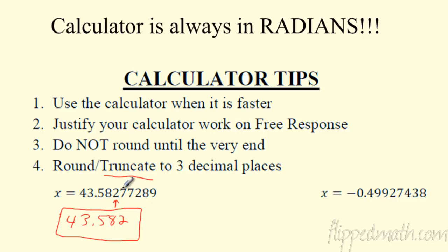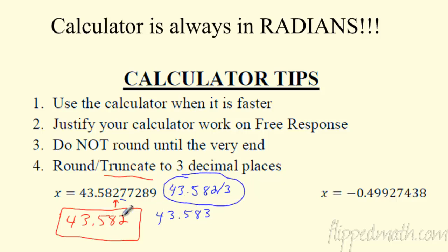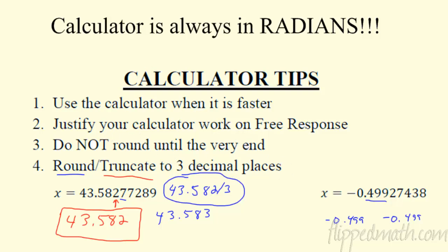If you round, you look at the next digit — it's above 5, so 43.582 rounds up to 43.583. A lot of times you'll see the answer key show 43.582/3 — either one gives you credit on the AP exam. I'm more of a truncator. For example, negative 4.99 — truncating, no extra thinking at all. Don't freak out if you see a slash. But don't round early — leave that full decimal until the very end, then round the final answer.